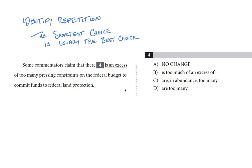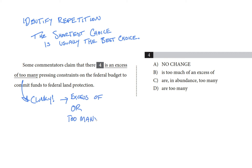Let's take a look at our target sentence again: 'Some commentators claim that there is an excess of too many pressing constraints on the federal budget to commit funds to federal land protection.' Excess of too many immediately strikes me as clunky and repetitious. I'd say there is an excess of or there are too many — because right now that's just too much at once. Excess of is redundant with too many, so if I were going to fix that sentence, I would just choose one.